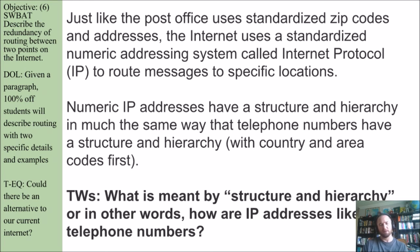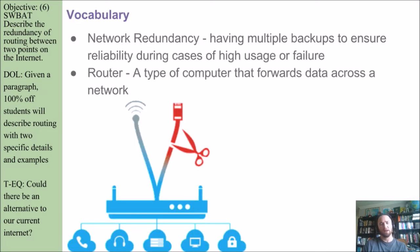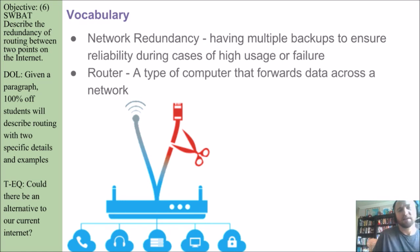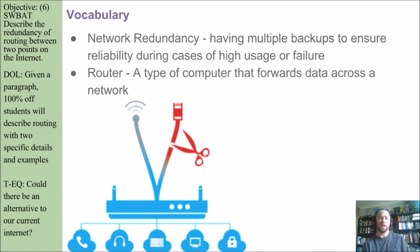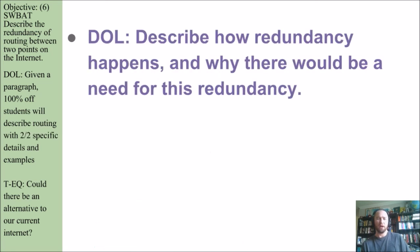Think and write: what is meant by structure and hierarchy — in other words, how are IP addresses like telephone numbers? Vocabulary: network redundancy means having multiple backups to ensure reliability during cases of high usage or failure. Think back to multiple servers having the same data on them. And a router is a type of computer that forwards data across a network. DOL: describe how redundancy happens and why there would be a need for this redundancy in networking.